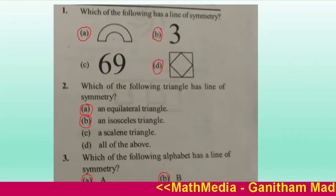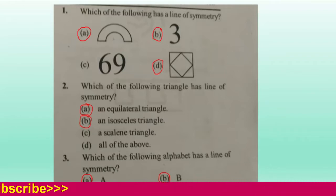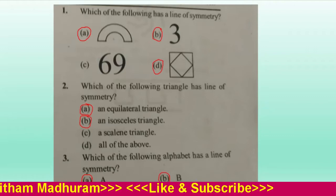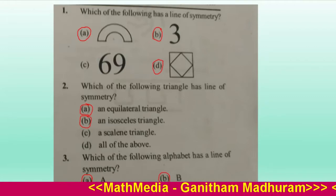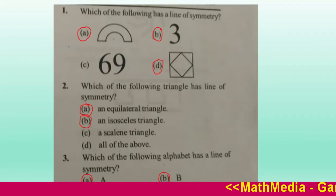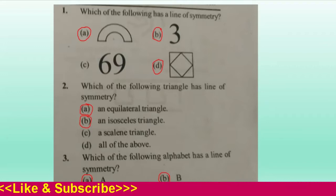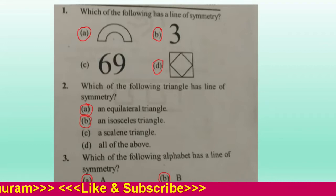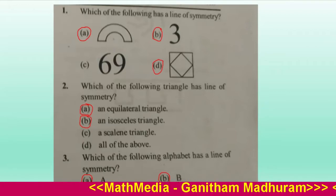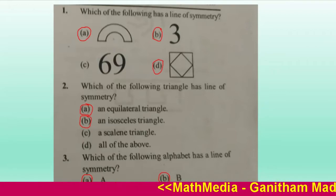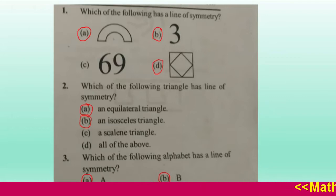Each of the following has line symmetry. Option A has line symmetry. Option B is also having line symmetry. C doesn't have line symmetry. And option D has line symmetry. So the correct options are A, B, and D. Question number 2.